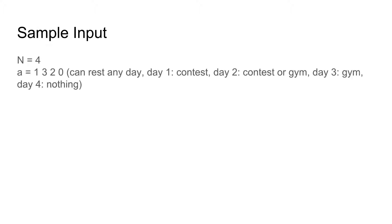Let's look at the sample input. n, which is the number of days, is 4. The array a of restrictions for each day is 1, 3, 2, and 0. We can rest on every day. On day 1 we also have the option of contest; on day 2 we have contest and gym; on day 3 we have gym; and on day 4 we have no additional option, so we must choose rest. The answer is 2, and we simply output the number 2.